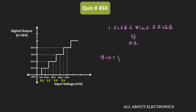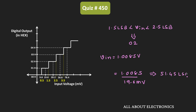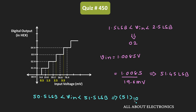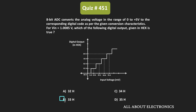The input voltage is 1.0085V. In terms of LSB, we represent it as 1.0085V divided by 19.6mV, which corresponds to 51.45 LSB — or we can say the number of steps is 51.45. Since the input voltage is between 50.5 LSB and 51.5 LSB, the corresponding output code is 51 in decimal. Converting 51 to hexadecimal gives 33H. Therefore, for the given input voltage, the corresponding output code is 33H, making option B the correct answer.